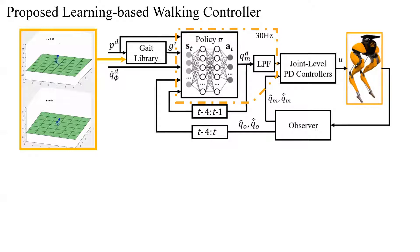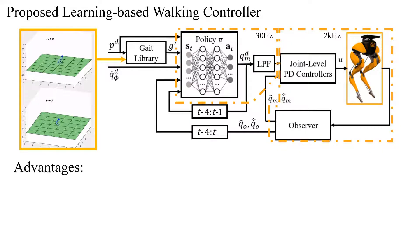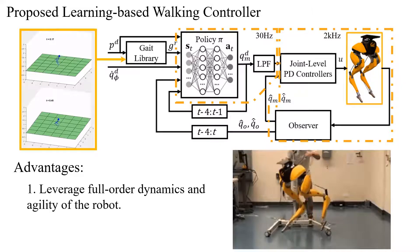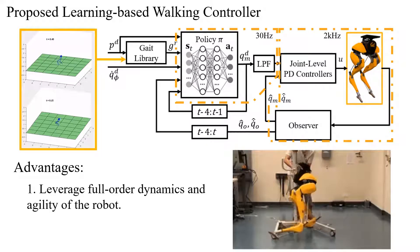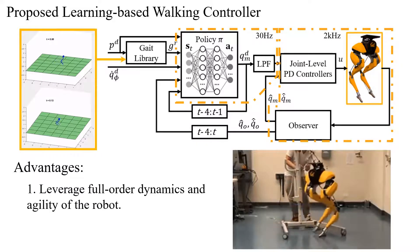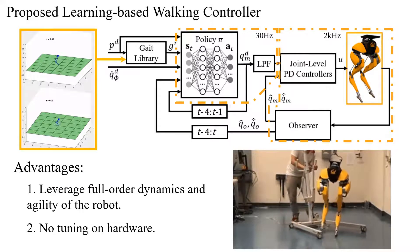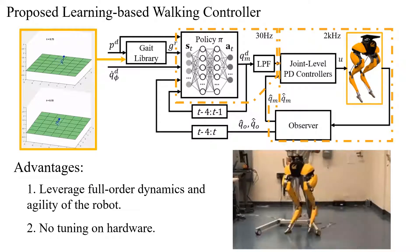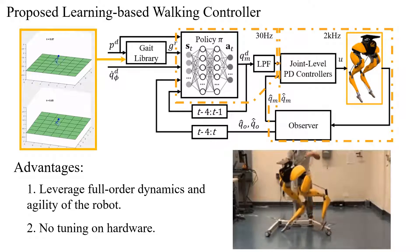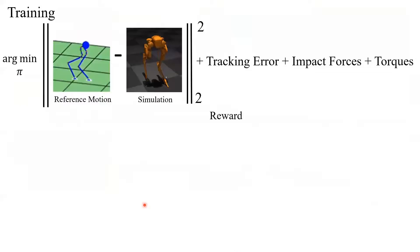Our RL-based policy runs at 30 Hz, and the low-level PD controllers run at 2 kHz. This method is able to use the full-order dynamics of the robot offline and thus shows quite robust behaviors such as fall recovery. Moreover, this requires no gain tuning on hardware; instead, we tune the reward function in simulation. The reward encourages the agent to mimic reference motions while tracking commands and reducing impact forces and motor torques.